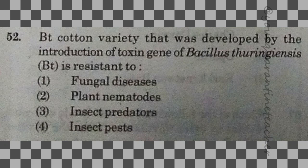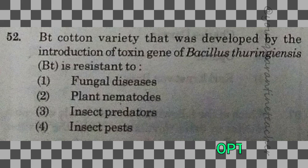52nd question: Bt cotton variety has been developed by the introduction of the toxin gene of Bacillus thuringiensis and is resistant to — option 4 — insect pests. That is the right answer.